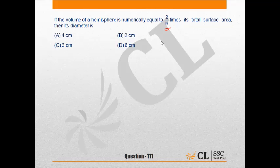The volume of a hemisphere is equal to 2/3 πr³, and its total surface area of a hemisphere is 3πr².